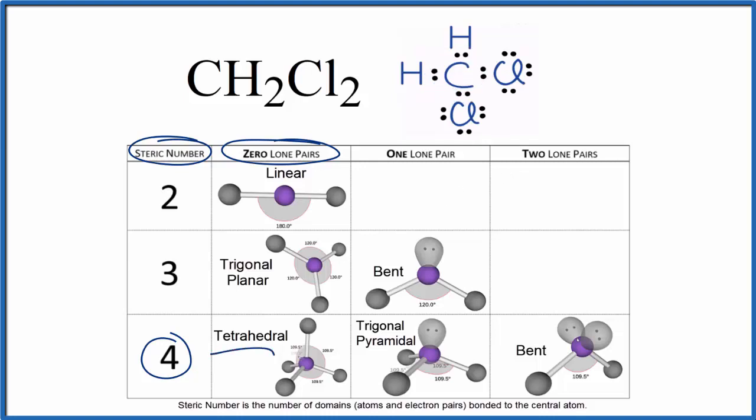That means we have a tetrahedral molecular geometry, and the bond angle will be about 109.5 degrees. It'll be a little bit different because of these chlorine atoms here. Let's see if we can visualize the molecular geometry here for CH2Cl2.